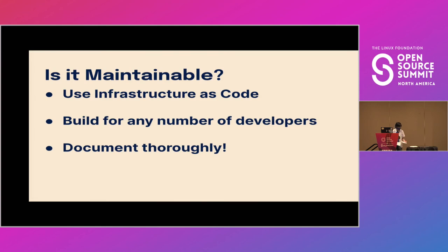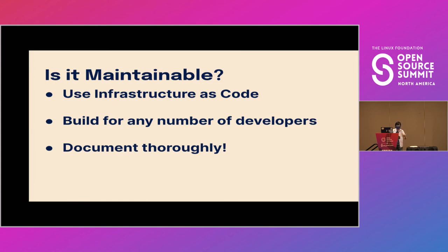Write stuff down. Document your functions — even if it's just using an OpenAPI spec to record expected inputs and outputs. Have a project plan so you know what you're building and where you're going. If you had a design idea, write it down so you don't forget. This is you being the maintainer you want to see in the world.